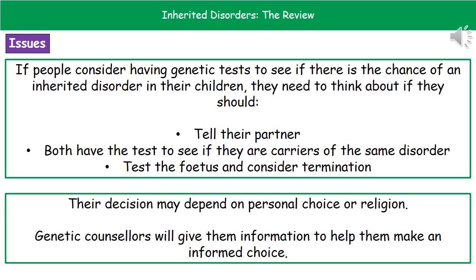There are some issues surrounding inherited disorders because these days we have the ability to carry out genetic tests to identify if people are carriers or if they have inherited conditions. Before having these genetic tests, there are a few things to consider. First, if you test yourself and get a result, should you tell your partner? Second, if you're in a relationship and considering children, are you both going to test to see if you're carriers of the same disorder? If you are both carriers, there's a risk your child could have the condition.